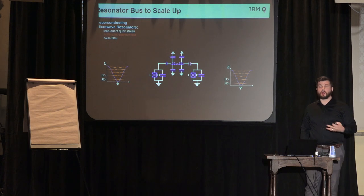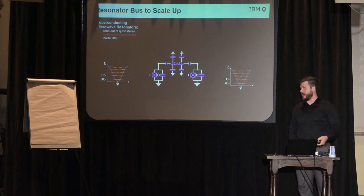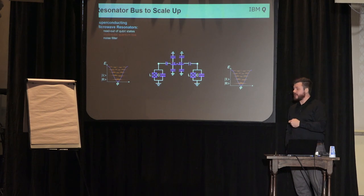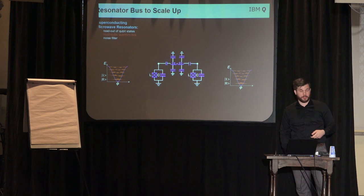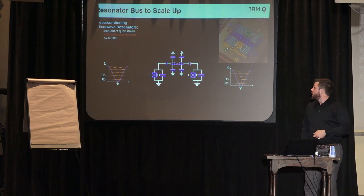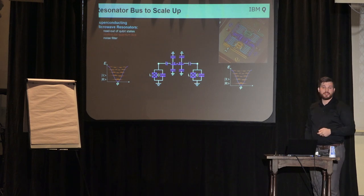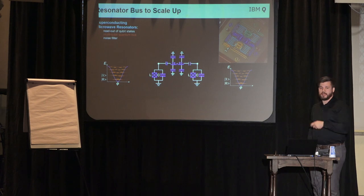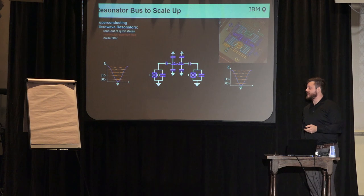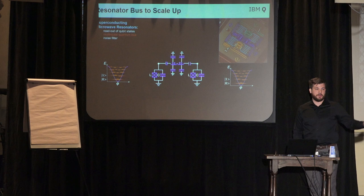At IBM you can use these fixed frequency resonators as a way to couple two different qubits together — a resonator bus. When you do that, you end up realizing a cross-resonance gate for your two-qubit gates. In principle though, you could take this and turn it into a tunable thing, which is what Google does with tunable couplers. These light blue things here are coupling resonators, and the resonators on the outside are the readout resonators. In this specific realization you end up having a resonator for each individual qubit.